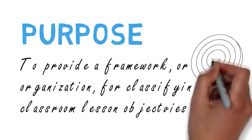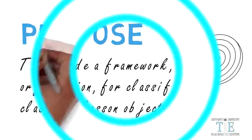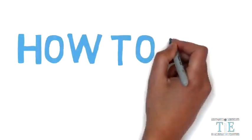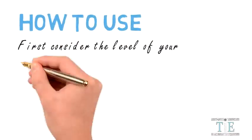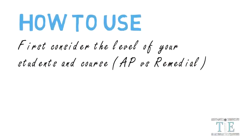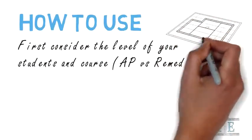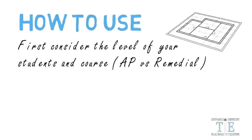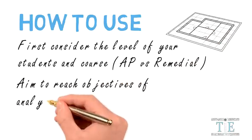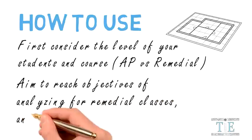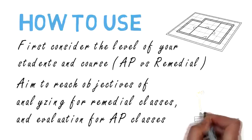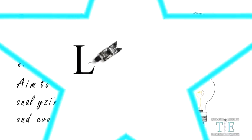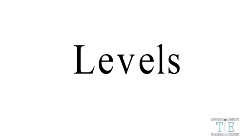Teachers can build their lessons through Bloom's Taxonomy. The first thing you want to do is consider the level of your students and the course level. A lesson for an algebra special education class will be different from an algebra advanced placement class. Aim to reach objectives for analyzing for remedial classes, and evaluation for advanced placement classes.